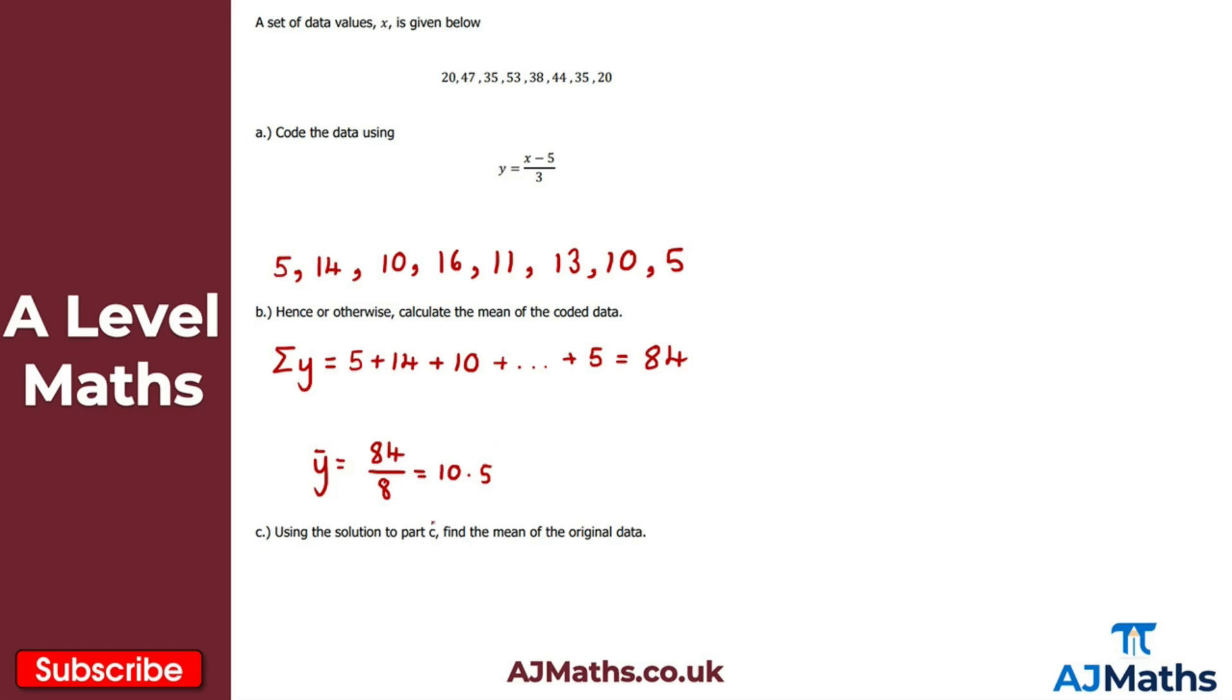For part c here, we have a little typo that should say part b. So using the solution to part b, find the mean of the original data. Where do we begin with this? Well, we've just deduced that the mean of the coded data was 10.5, so we know that y bar is equal to 10.5.